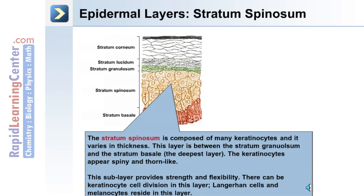The stratum spinosum is composed of many keratinocytes and it varies in thickness throughout different regions of the body. This layer is between the stratum granulosum and the stratum basal or the basal layer. The keratinocytes appear spiny and thorn-like in the stratum spinosum. This sub-layer provides strength and flexibility.